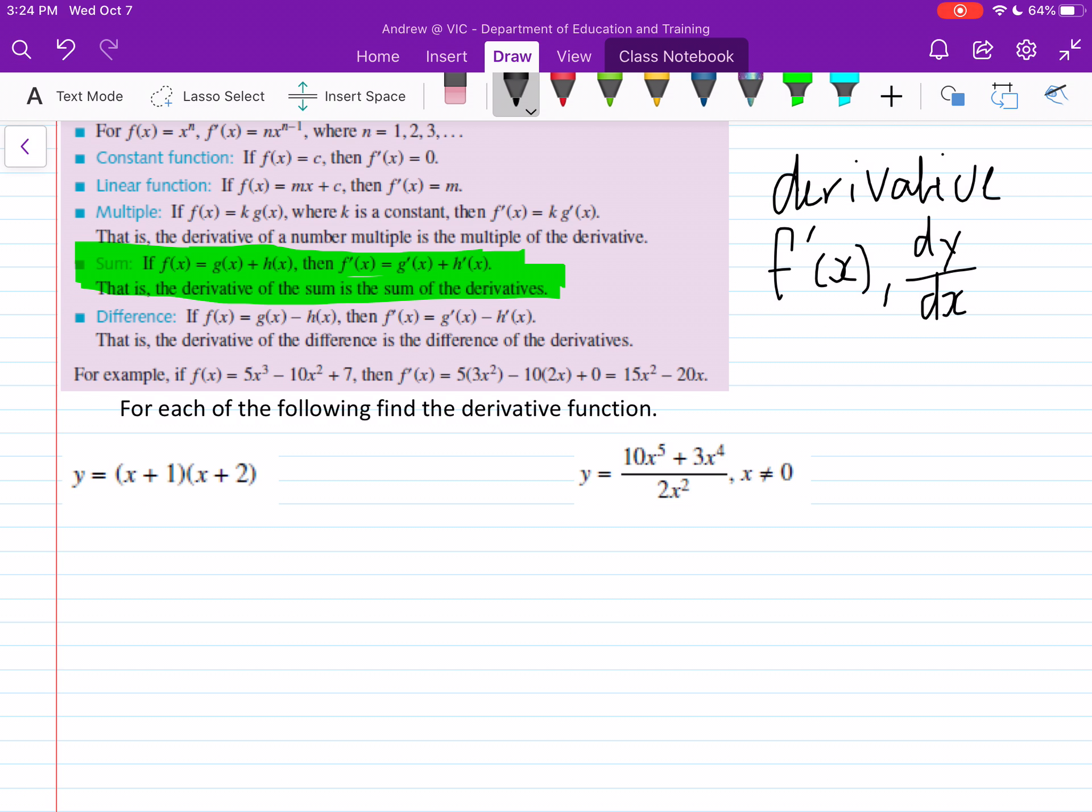So next year or when you're in year 12 you use the chain rule and quotient rule, but we're not doing that at the moment. We just convert these into polynomials first and then we solve for them. If you'd like to test yourself you can have a look at those two rules.